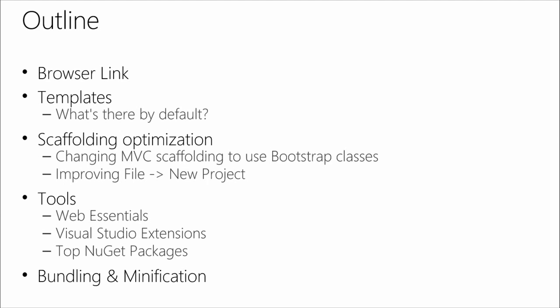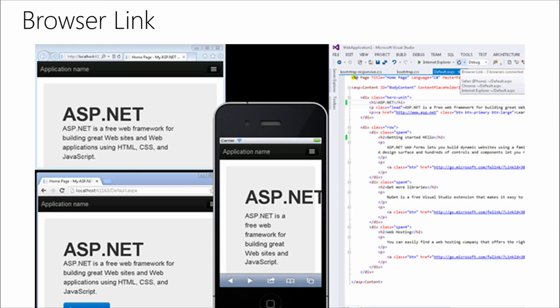That out of the way, let us talk about Visual Studio and ASP.NET integration. Here's the outline of what we'll be covering: Browser Link, which is magical and very helpful in working with front-end code. We'll look at what's in the templates by default. Then we'll go beyond and talk about scaffolding optimization in both MVC and web forms. Finally we'll show off some of the top tools. And time permitting, we'll dig into bundling and minification.